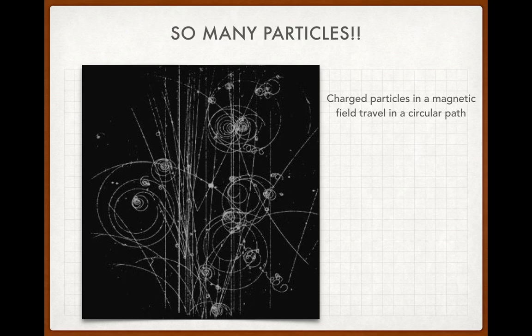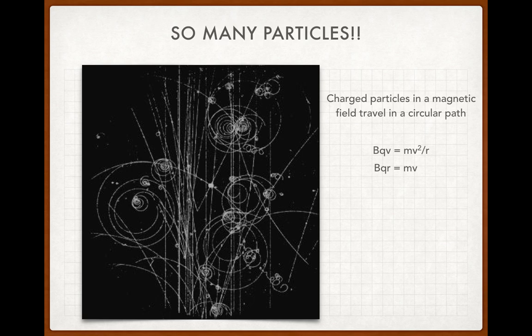Charged particles in a magnetic field travel in a circular path. The magnetic force, given by BQV, is the centripetal force. So we have magnetic flux density times charge times speed equals mass times speed squared divided by the radius. Cancelling the velocity from both sides and rearranging gives BQR — magnetic flux density times charge times radius — equals mass times velocity. As a side note, mass times velocity is momentum, so if you're asked for the momentum of a charged particle in a particle accelerator, you'd multiply B by Q by R.